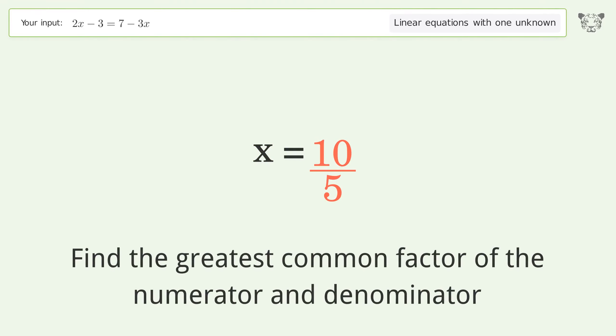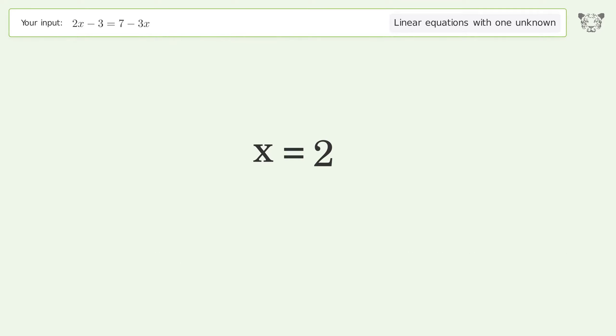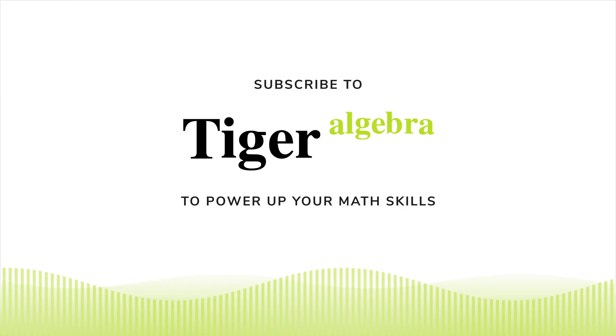Find the greatest common factor of the numerator and denominator. Factor out and cancel the greatest common factor. And so the final result is x equals 2.